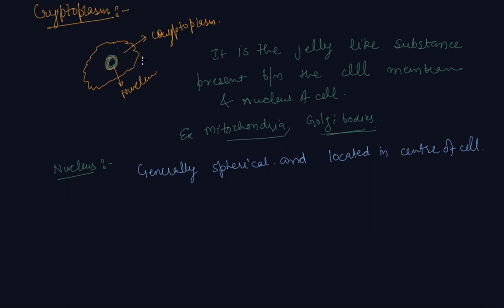The nucleus is separated from the cytoplasm by a membrane called the nuclear membrane. There is one more membrane around the nucleus which separates it from the cytoplasm. This membrane is porous — meaning it has minute holes — and allows the movement of materials between the cytoplasm and the inside of the nucleus.